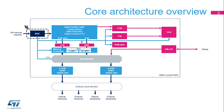All interrupts, including the core exceptions, are managed by the NVIC. The NVIC and processor core interface are closely coupled, which ensures a low interrupt latency and enables the efficient processing of late-arriving interrupts. Access to the NVIC's control and status registers is performed through the private peripheral bus (PPB), internal to the Cortex-M33 CPU.